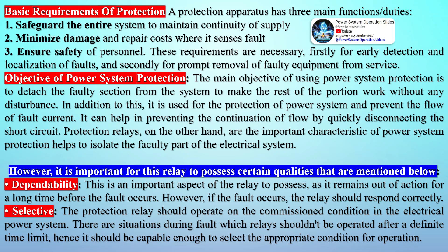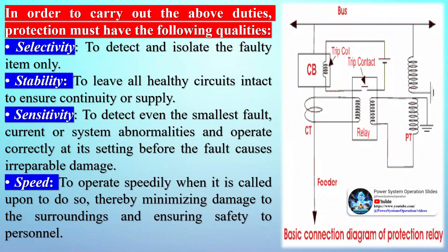In order to carry out the above duties, protection must have the following qualities. Selectivity: to detect and isolate the faulty item only. Stability: to leave all healthy circuits intact to ensure continuity of supply. Sensitivity: to detect even the smallest fault current or system abnormality and operate correctly at its setting before the fault causes irreparable damage. Speed: to operate speedily when called upon, thereby minimizing damage and ensuring safety to personnel. To meet all of the above requirements, protection must be reliable, which means it must be dependable — it must trip when called upon to do so — and secure — it must not trip when it is not supposed to.